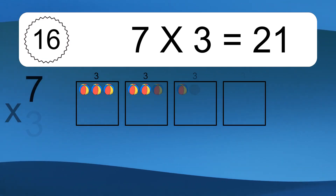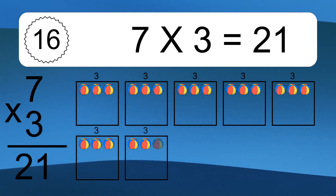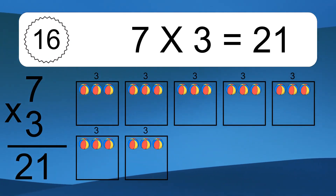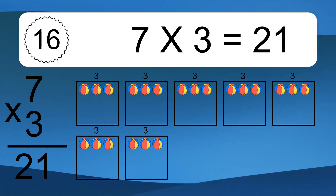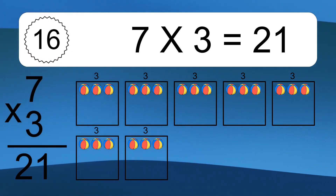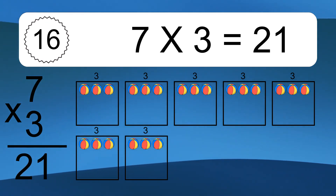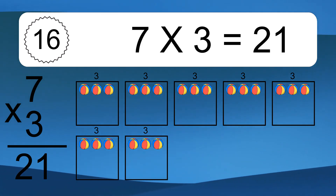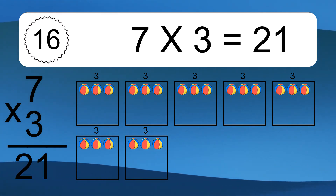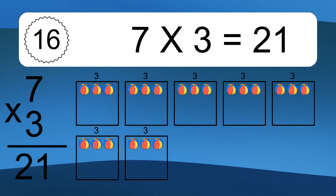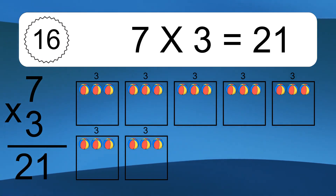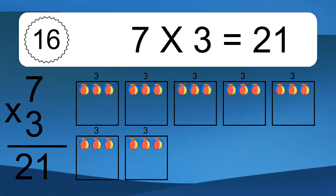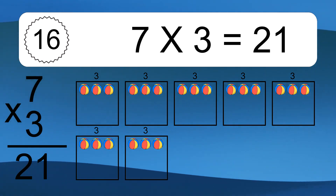7 times 3 equals 21. We have 7 boxes and each box has 3 colorful balls inside. If you count all the balls in all the boxes together, you will have 7 times 3 balls. This equals 21 balls.